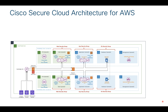If you look at this particular architecture, this is a vanilla architecture with an application load balancer front-ending your web servers. Then you have a network load balancer sitting between your app servers and your web tier.